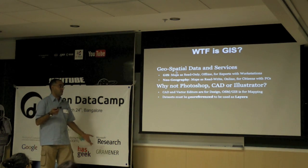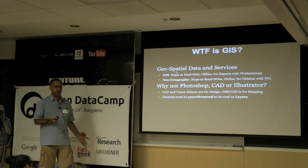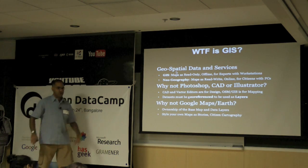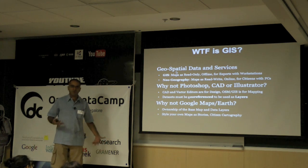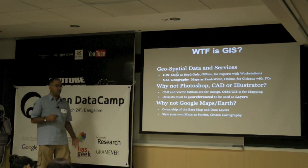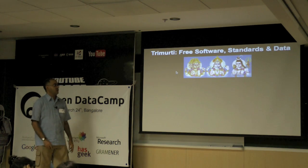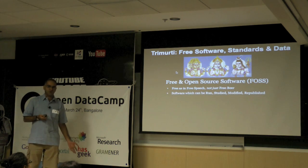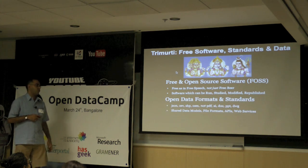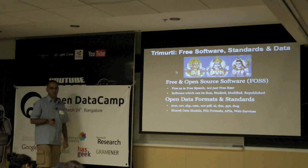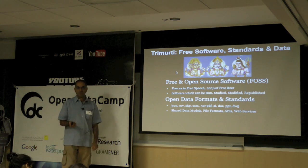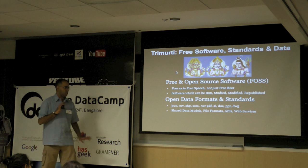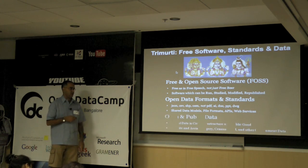Why not Photoshop, CorelDraw, Illustrator? Because they're not geographic drawing tools — they're just drawing tools. Every piece of data needs to be geo-referenced to be used spatially. Why not Google Maps or Google Earth? The ownership of the data is an issue. OpenStreetMap, like Wikipedia, is community-owned, and you can make your own maps and tell your own stories through it. For those of us from the free software movement, everything is based on free and open source software. Open data formats and standards are crucial, especially in GIS — because if a government agency gives you a PDF map versus a shapefile, they're empowering you in a totally different way with the raw data.